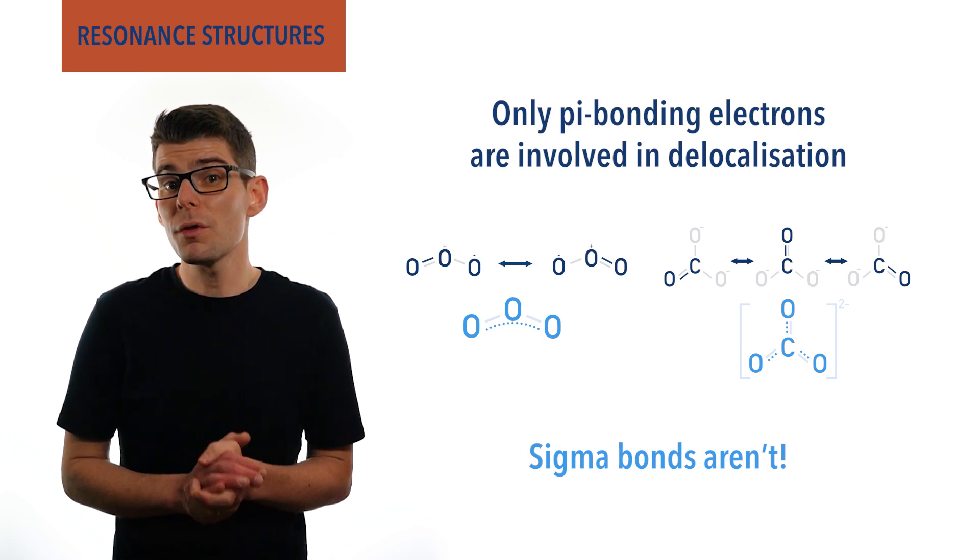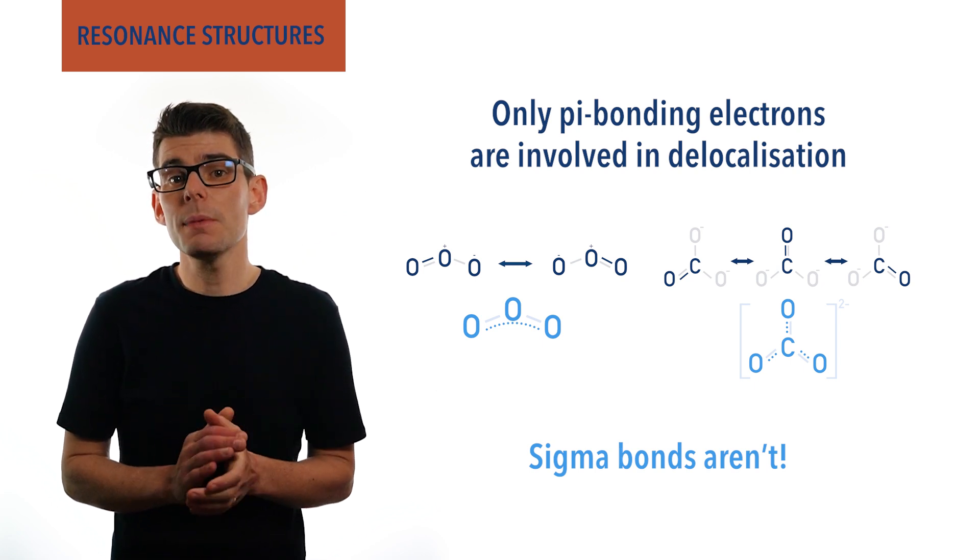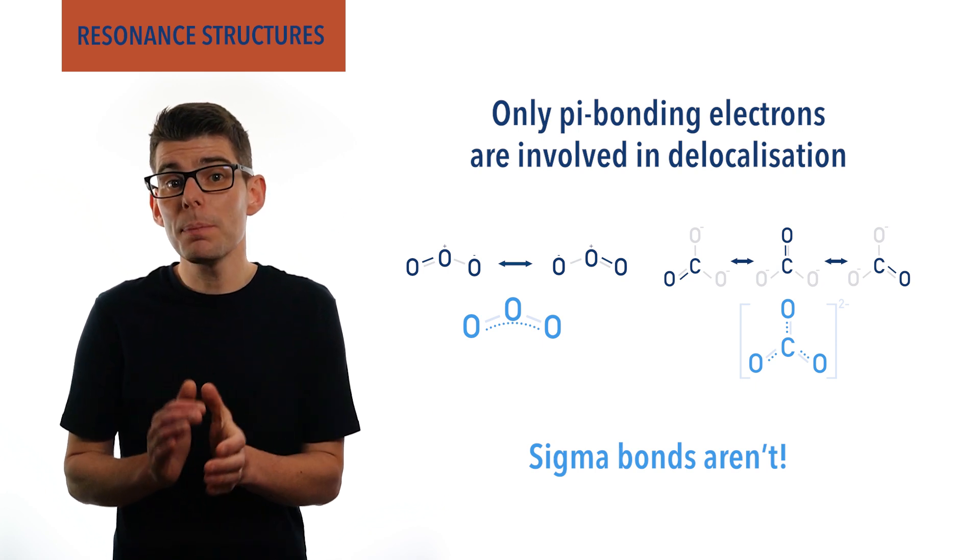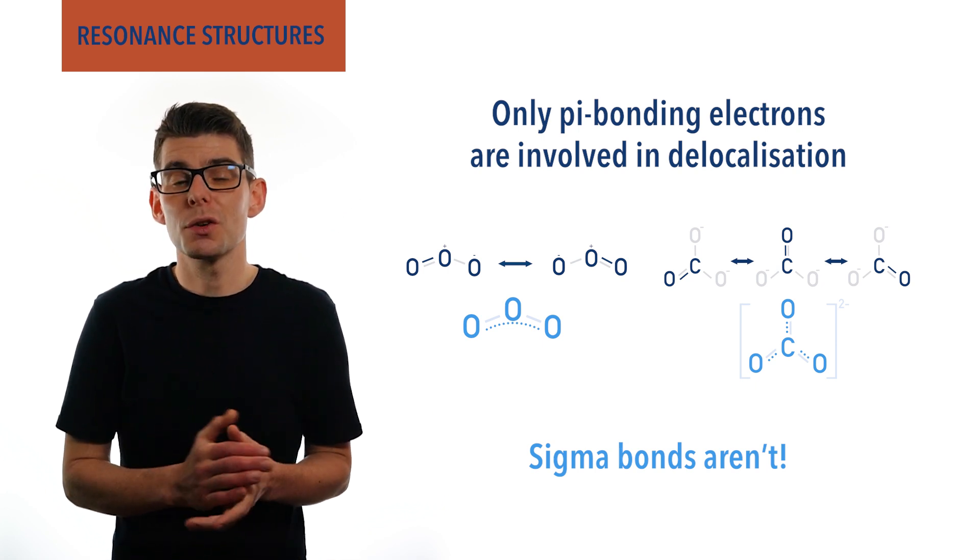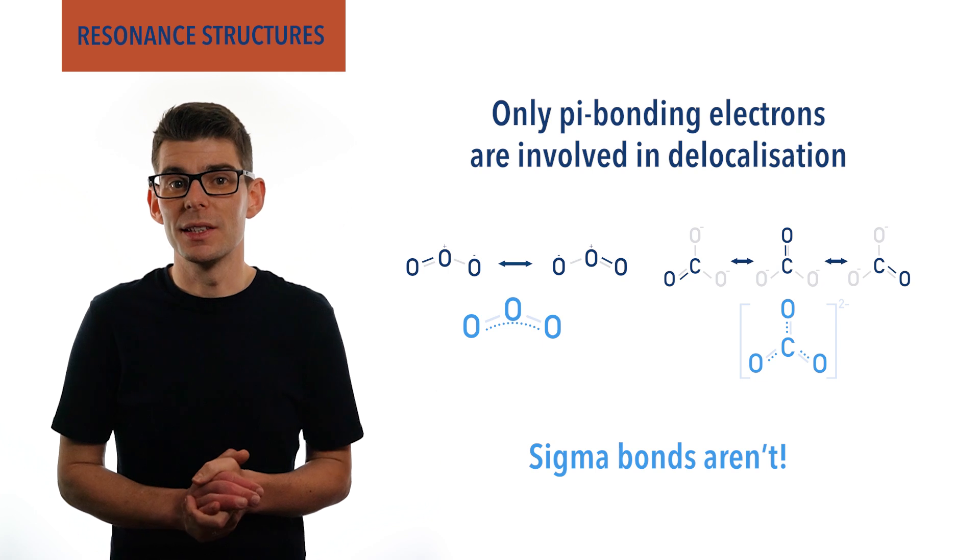This means that when drawing resonant structures, the sigma bonds must stay in place. Only the pi electrons can shift to create different resonance forms and be delocalized.